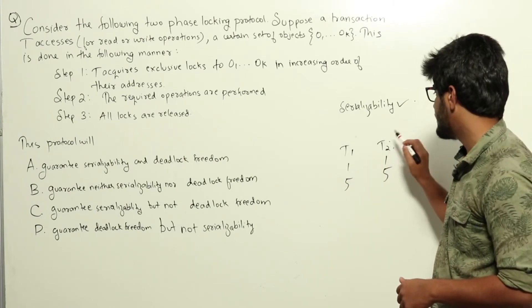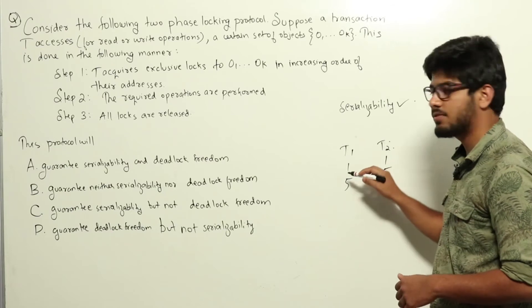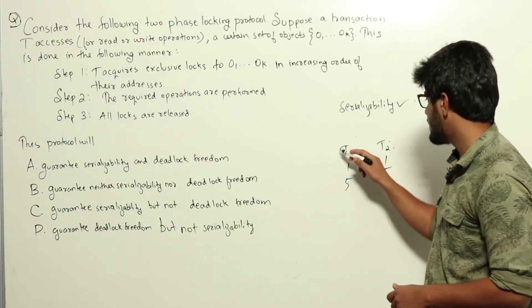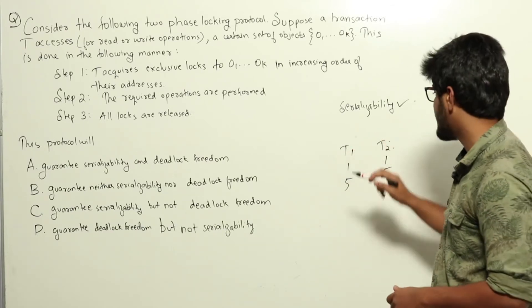Now, T1 will need 1 which is with T2, and T2 will need 5 which is with T1. That is circular wait. One is waiting on the other in a circular manner.